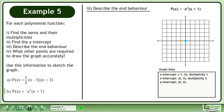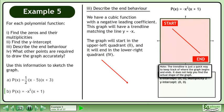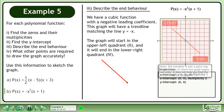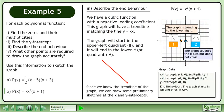Now we'll describe the end behavior. We have a cubic function with a negative leading coefficient. This graph will have a trendline matching the line y equals negative x. The graph will start in the upper left quadrant and it will end in the lower right quadrant. Since we know the trendline of the graph, we can draw some preliminary sketches at the x and y-intercepts. At the left x-intercept, the graph is trending to the lower right. At the next x-intercept, the graph touches the x-axis but does not cross.